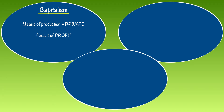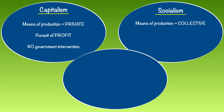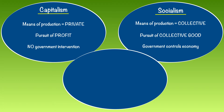Capitalism's main pursuit is profit, and there is little to no government intervention in the economy. As opposed to socialism, where the means of production is in collective hands — notably the government — and the pursuit is not for individual profit or gain. The pursuit is the collective good and the betterment of society as a whole, and in socialism the government is in control of the economy.